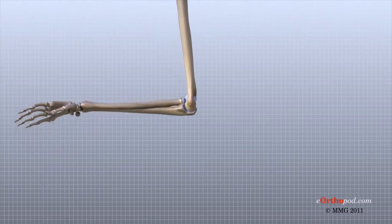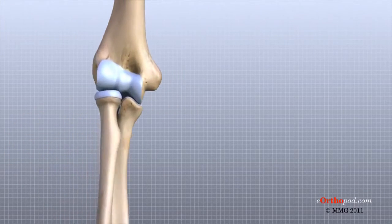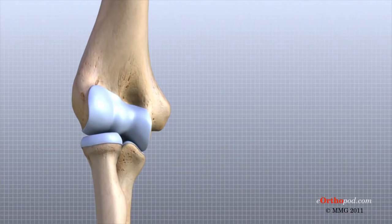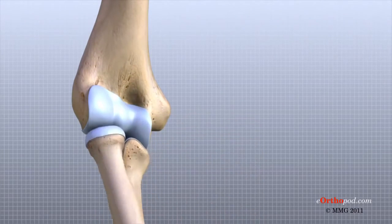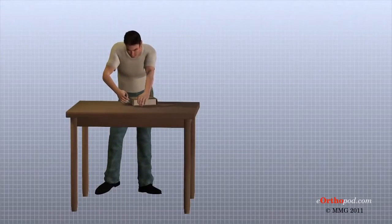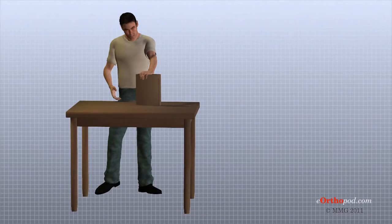As you can see, the elbow is more than simply a hinge. It is designed to provide maximum stability as we position our forearm to use our hand. When you realize all the different ways we use our hands every day and all the positions in which we place our hands, it is easy to understand how hard daily life can be when the elbow doesn't work well.